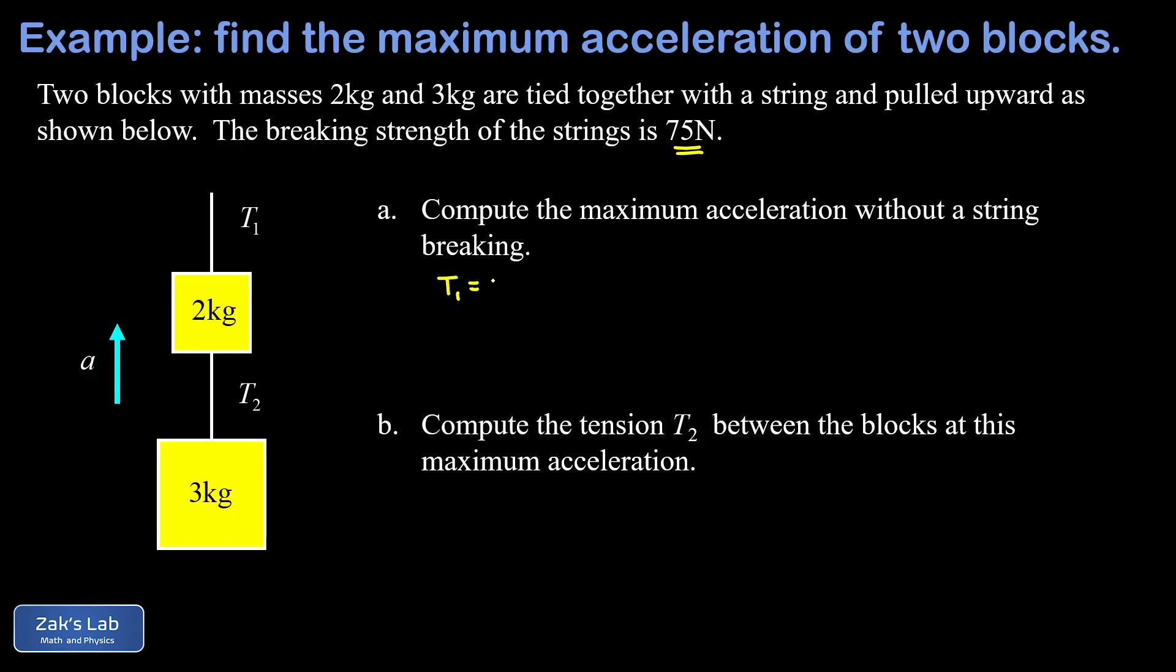And then we should find that T2 is less than 75 newtons at this acceleration. So probably the easiest way to get a handle on this problem of finding the maximum acceleration is to just draw a circle around all five kilograms and say well T1 is responsible for accelerating all five kilograms.